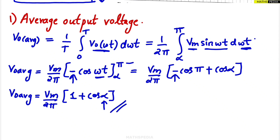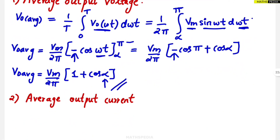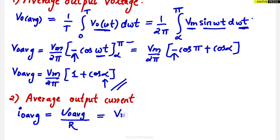Now let's go for the second thing: average output current. This is quite simple. Whatever Vout average we found, divide it by R — since I = V/R. So Iout(avg) = Vout(avg) / R = Vm / (2πR) × (1 + cos α).